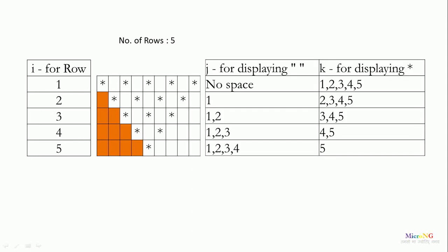For displaying the space, we are using a variable j. Look at the first row — the first row does not require any space, so we are not doing any counting for j on the first row. On the first row, we display 5 stars, and we are using another index variable k for that. So k value will range from 1 to 5 because we want to display 5 stars.